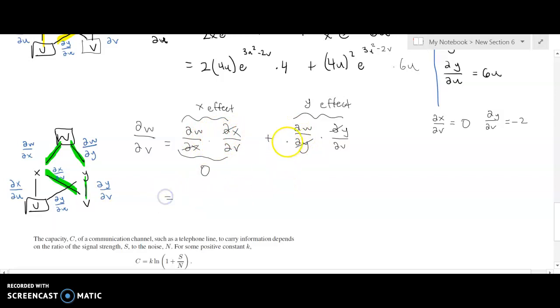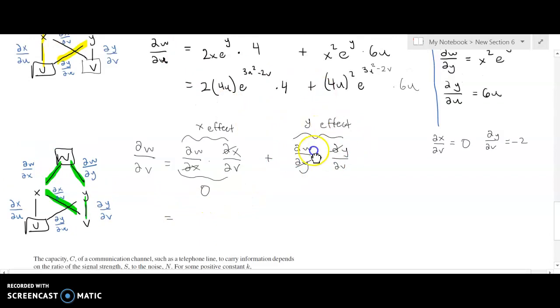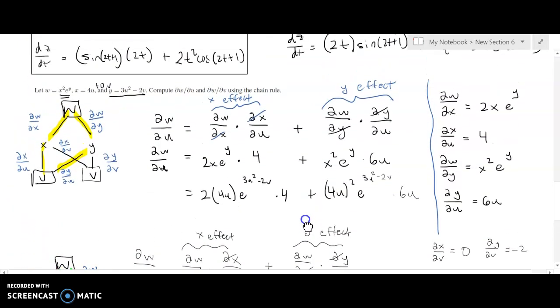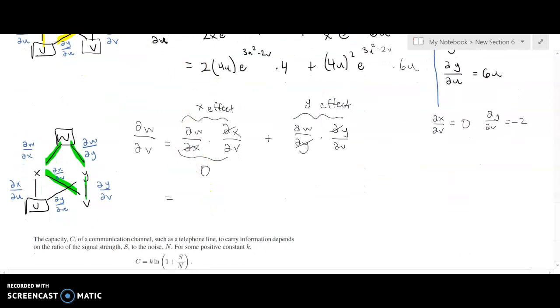And now we just need to account for the second term. So dw/dy, we know that from above. Dw/dy is x squared e to the y. So x squared times e to the y. And then multiplied by dy/dv, which we just found out is negative 2.